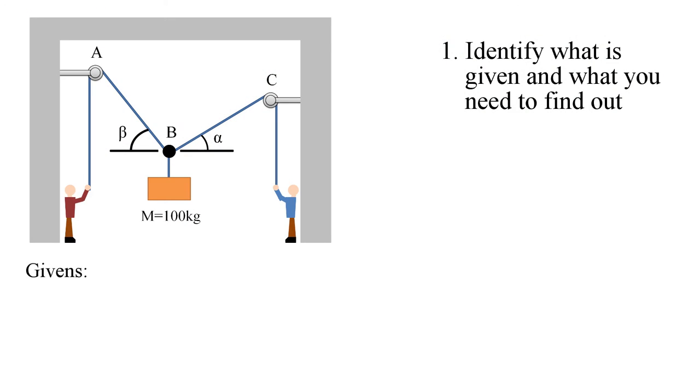So, in this problem, you are given the angles alpha and beta and the mass of the crate. Let's write this down. Alpha is equal to 30 degrees and beta is equal to 45 degrees. Since we want the weight of the crate and we are given the mass, we need to convert it. So, let's convert the mass to weight by using the equation W equals mg. Now, we need to identify what are the unknowns. In this case, there are two unknown forces. Let's denote these two forces on the cables as T sub AB and T sub BC.